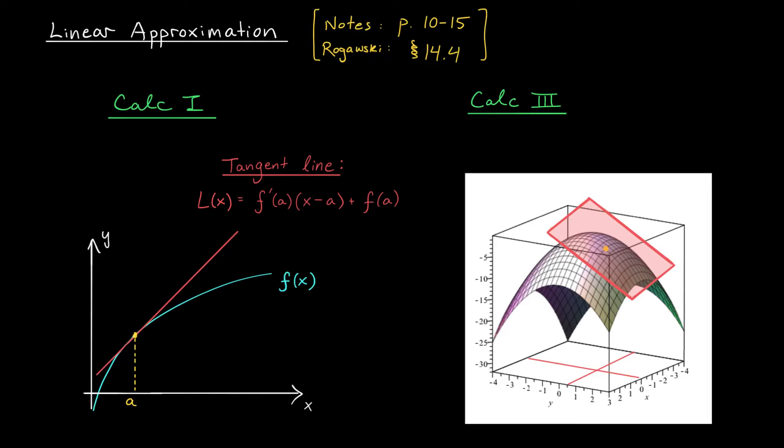Hey there folks, and welcome back. In our last lesson, we derived the formula for the equation of the tangent plane to our surface at a given point AB. But why did we do this? Why is the tangent plane important?